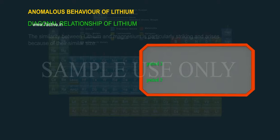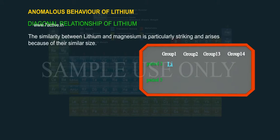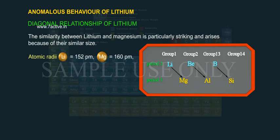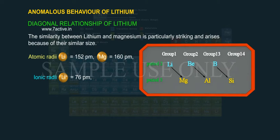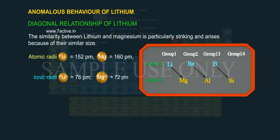Diagonal relationship of lithium. The similarity between lithium and magnesium is particularly striking and arises because of their similar size. Atomic radii: Li = 152 pm, Mg = 160 pm. Ionic radii: Li⁺ = 76 pm, Mg²⁺ = 72 pm, and similar polarizing power.